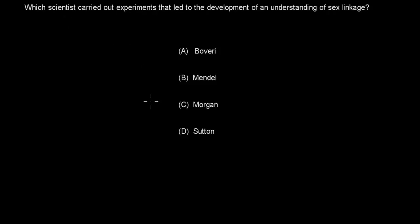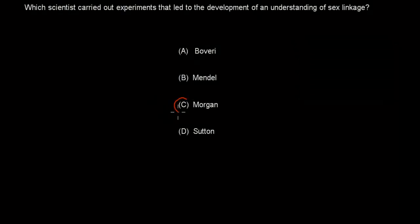Next question. Which scientists carried out experiments that led to the development of an understanding of sex linkage? A. Boveri. B. Mendel. C. Morgan. D. Sutton. Pause the video and attempt the question. Welcome back. The answer for this one is Morgan. Boveri is false and Sutton is false because it has to do with chromosomes, general chromosomes, not with sex linkage. Mendel is false because it has to do with just the factors, the early gene hypothesis. Morgan did his experiment that showed sex linkage.